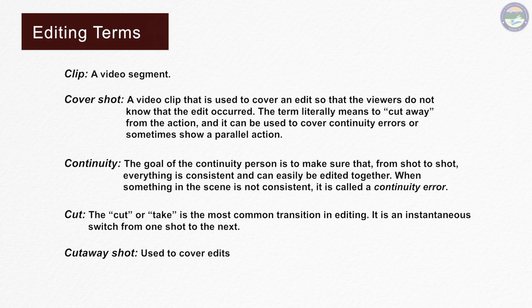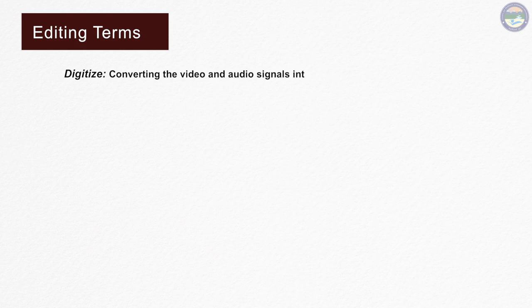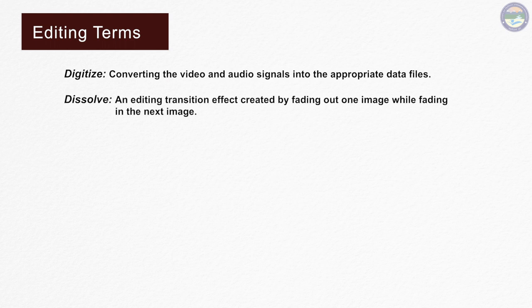Cut away shot is used to cover edits when any sequence is shortened or lengthened. Generally, it is a shot of something outside of the current frame. Digitize means converting the video and audio signals into the appropriate data files. Dissolve is an editing transition effect created by fading out one image while fading in the next image. DVE stands for digital video effect.